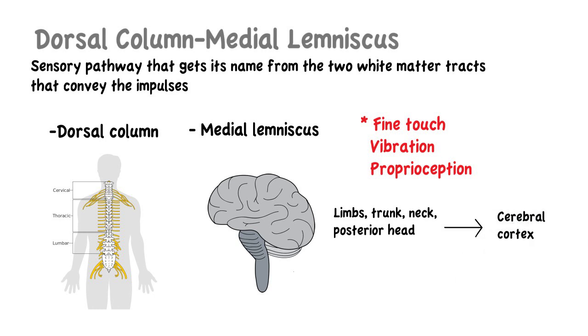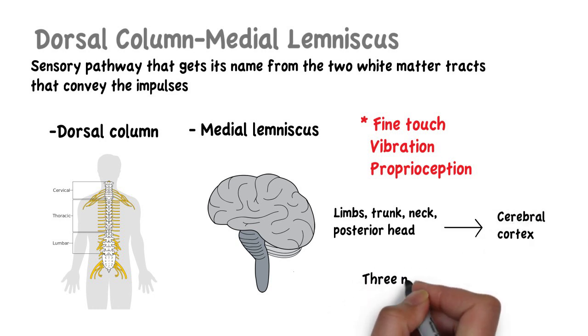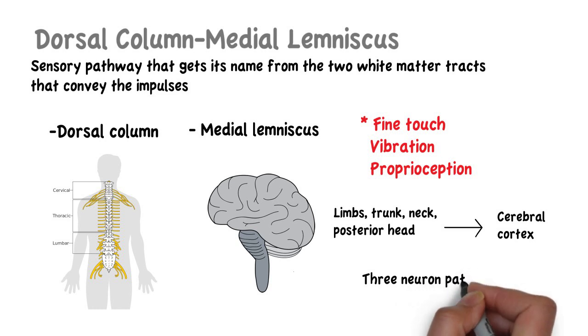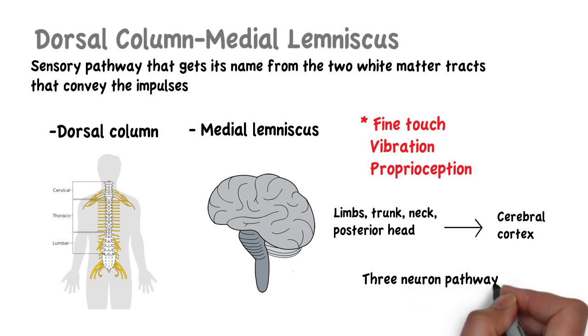The dorsal column medial lemniscus pathway is composed of three groups of neurons: the first order, second order, and third order neurons.